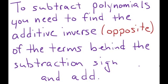There's a little twist. So to subtract polynomials, you are going to find the additive inverse. Additive inverse is just a fancy way of saying opposite of the terms behind the subtraction sign and add.